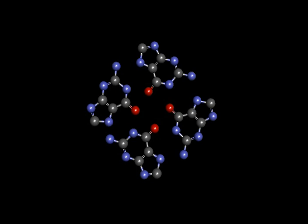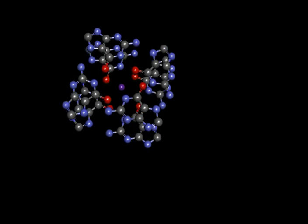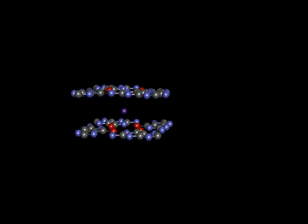Because H bonds in this case Hoogstein to Watson-Crick at right angles, a square planar tetrad can form. And you can see this is a very electronegative center and can therefore coordinate a monovalent cation.